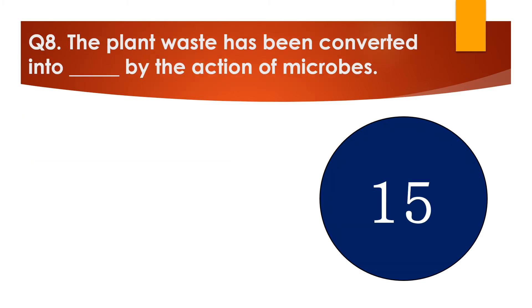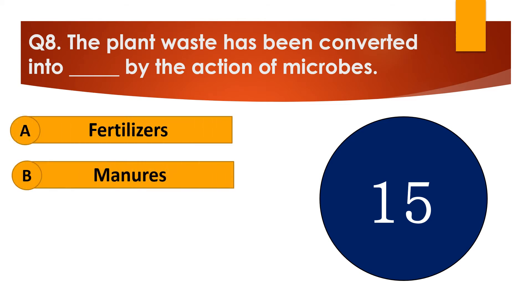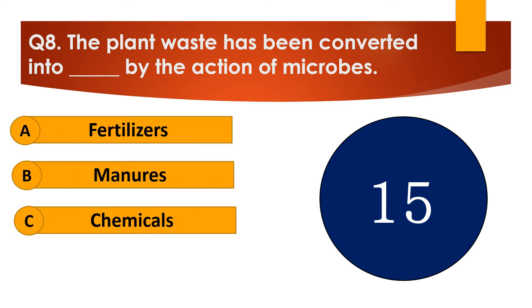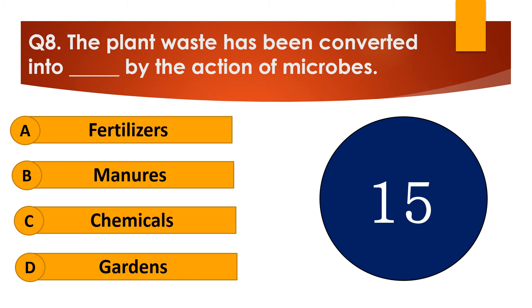Question number 8. The plant waste has been converted into dash by the action of microbes. The options are: A. Fertilizers, B. Manures, C. Chemicals, or D. Gardens.